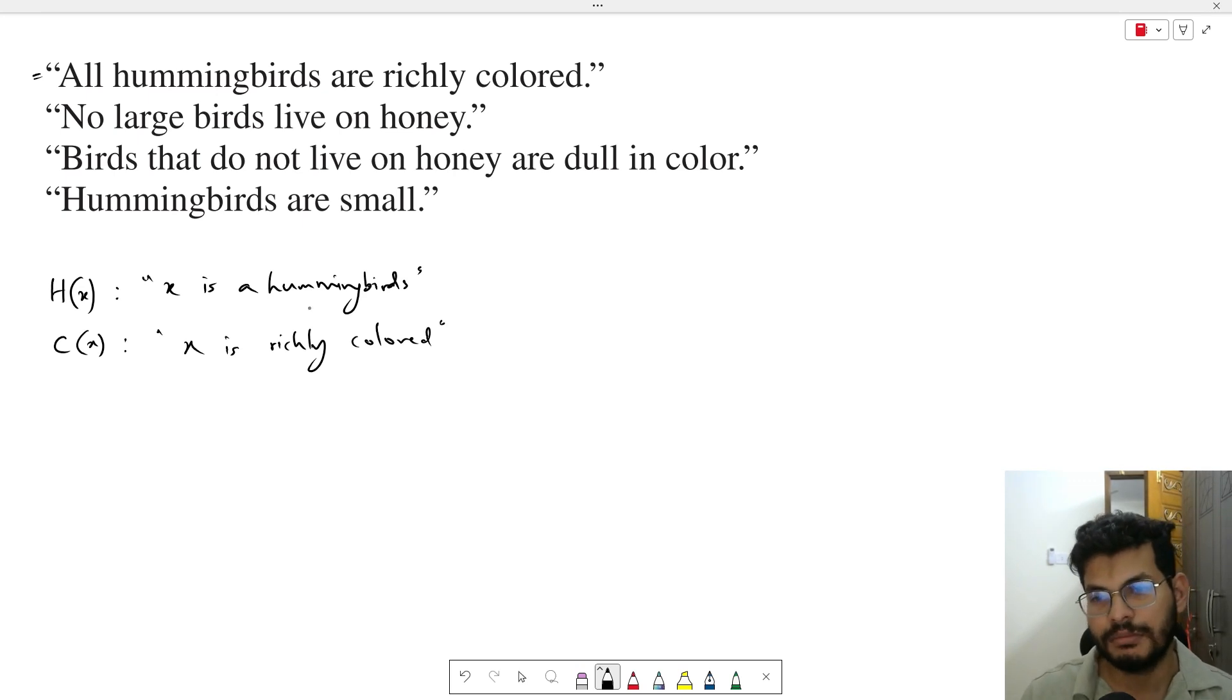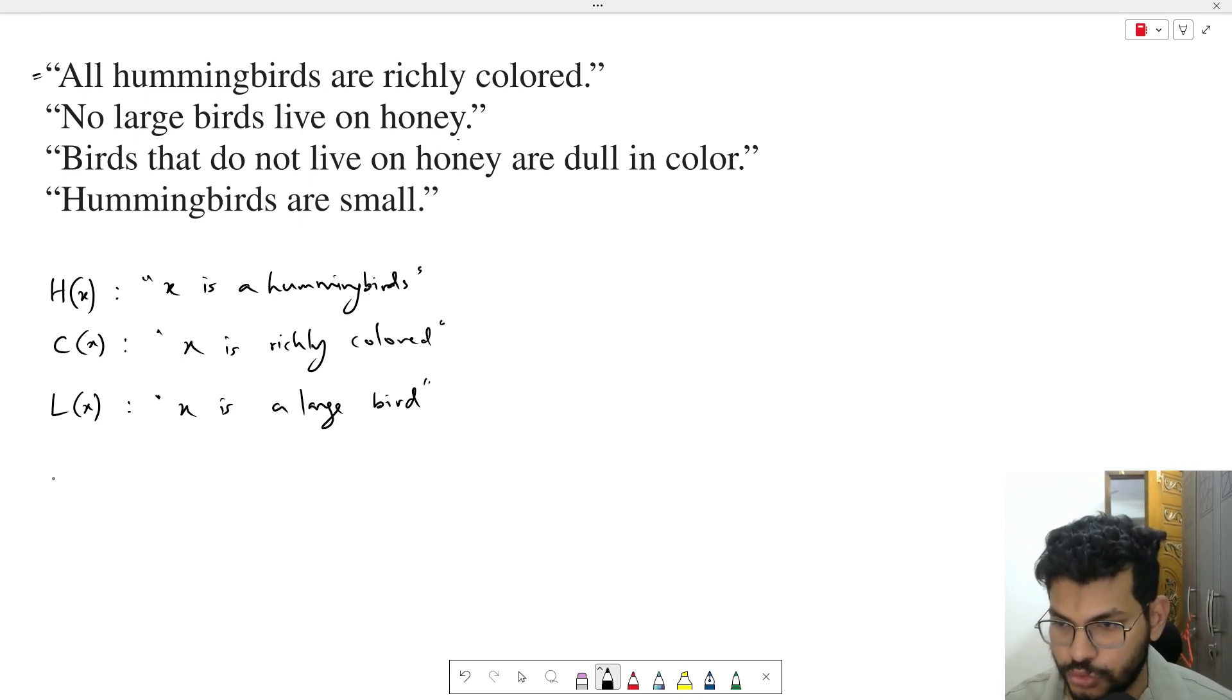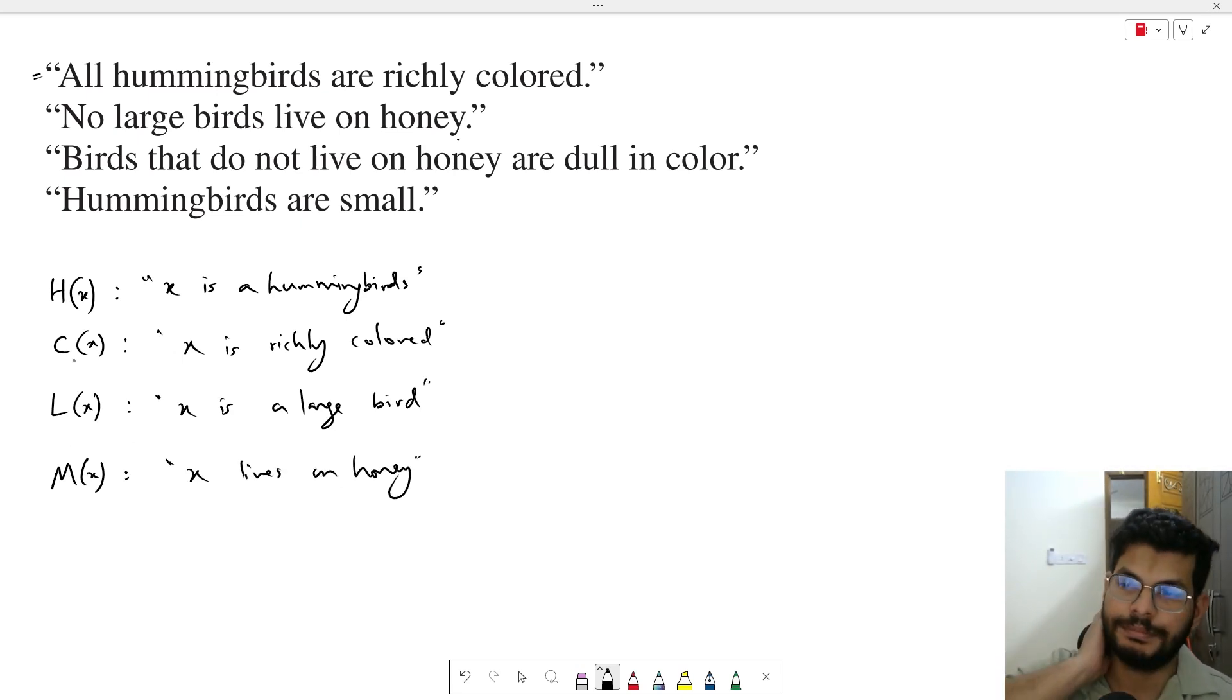Now all hummingbirds are richly colored - that's universal quantification. No large birds live on honey. Let L of X mean X is a large bird, and M of X mean X lives on honey.